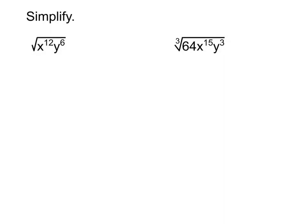In yesterday's lesson, we saw how to simplify something like the square root of x to the 12th by turning it into a fractional exponent — x to the 12 over 2 — and then reducing that fraction. In this case it reduces down to a nice whole number: x to the 6th. That's what we covered yesterday.